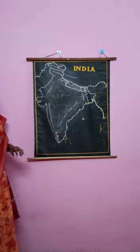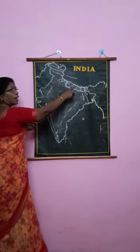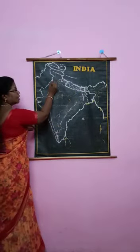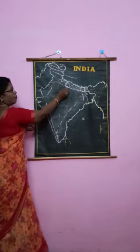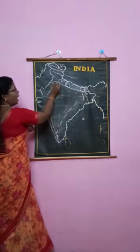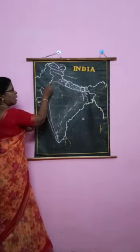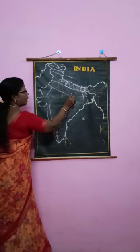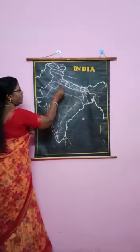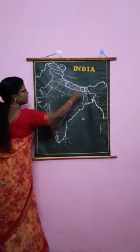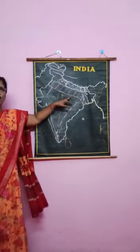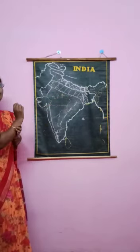Next we will come to the other physiography — very important ones. Northern Himalayas, that is the Great Himalayas. Next, northern plains — Indo-Gangetic plain. Start from the end of this mountain range and draw the plain from Punjab, Haryana, UP, Bihar, Chhattisgarh, and connect this area. So this area is the Indo-Gangetic plain or northern plain.